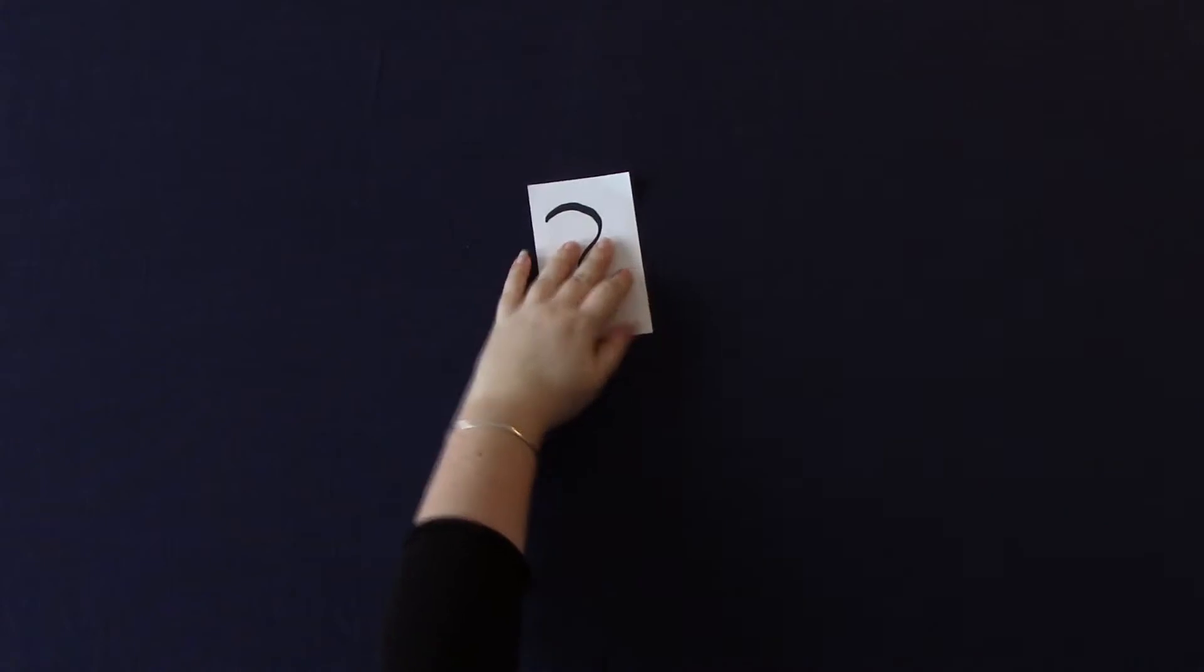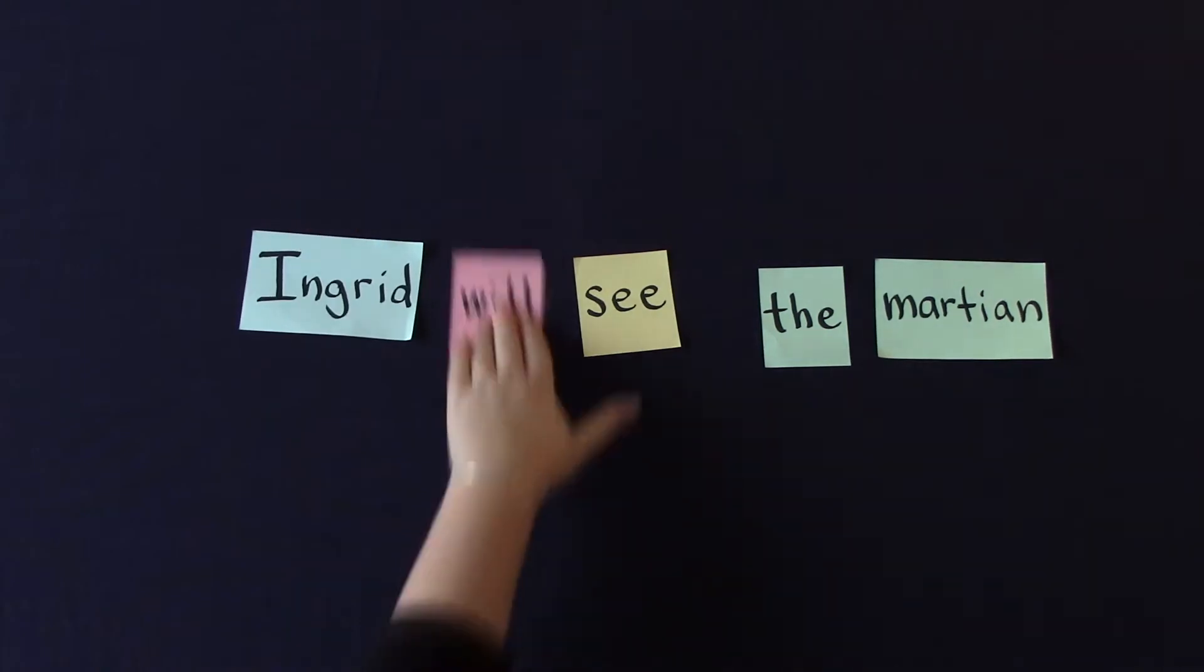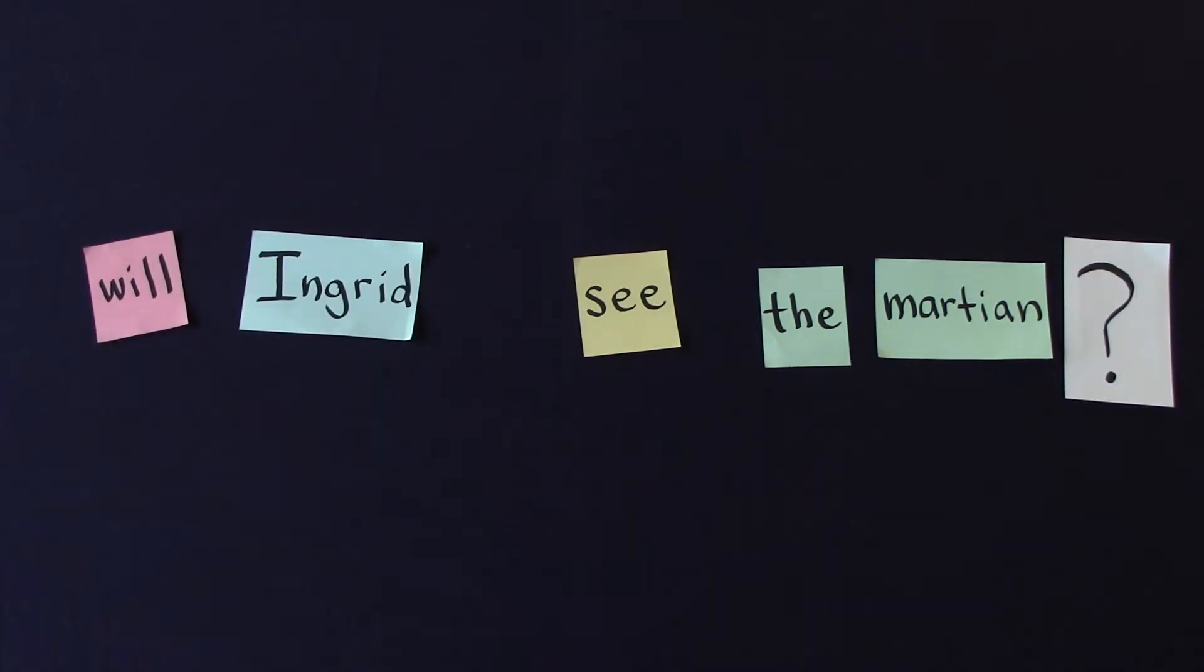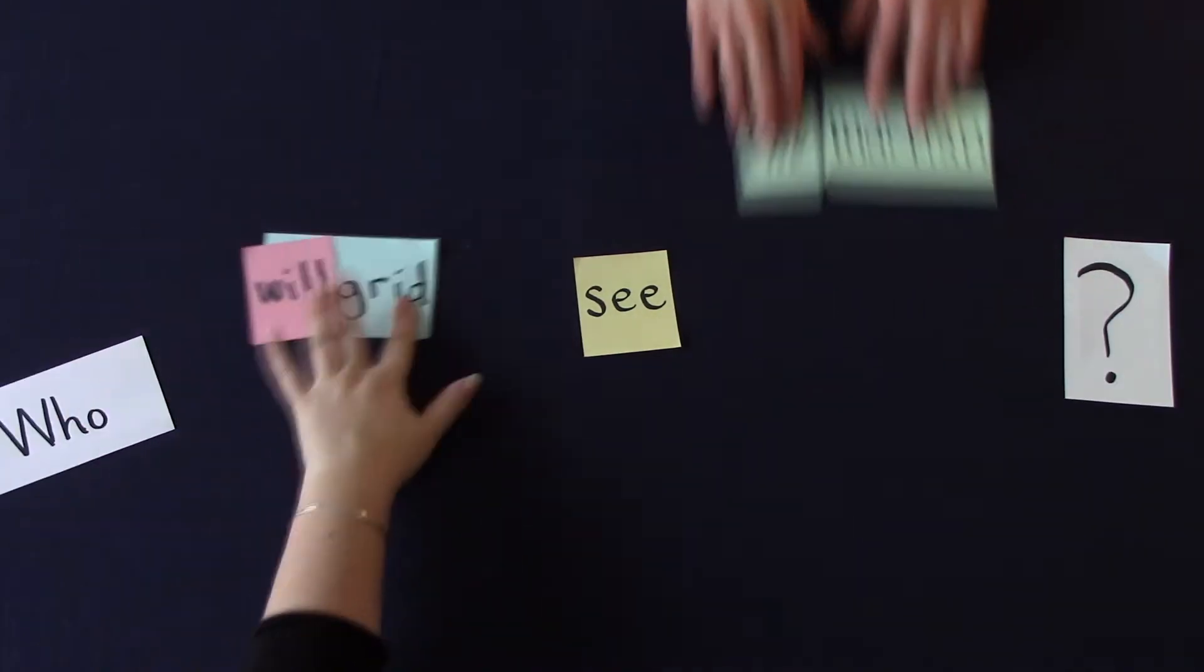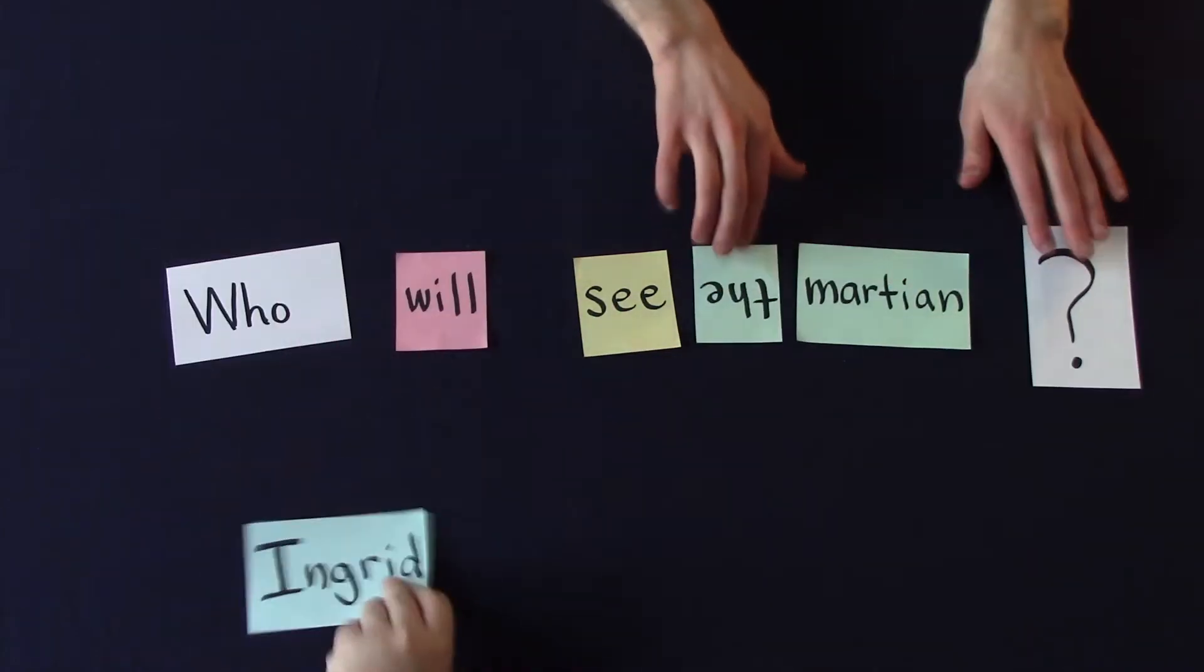Let's look at what happens when we make questions. So here's our same example sentence. We can make this into a couple different questions. Here's one question, or here's another question, and here's a third.